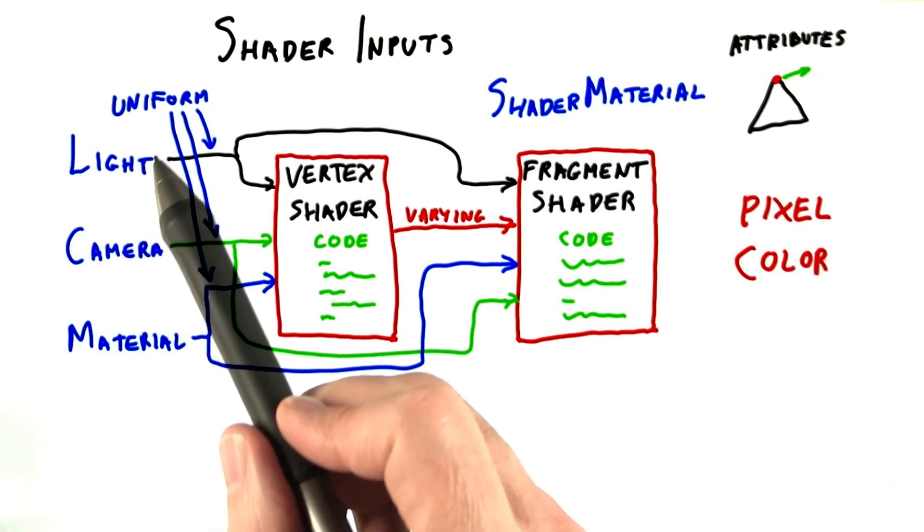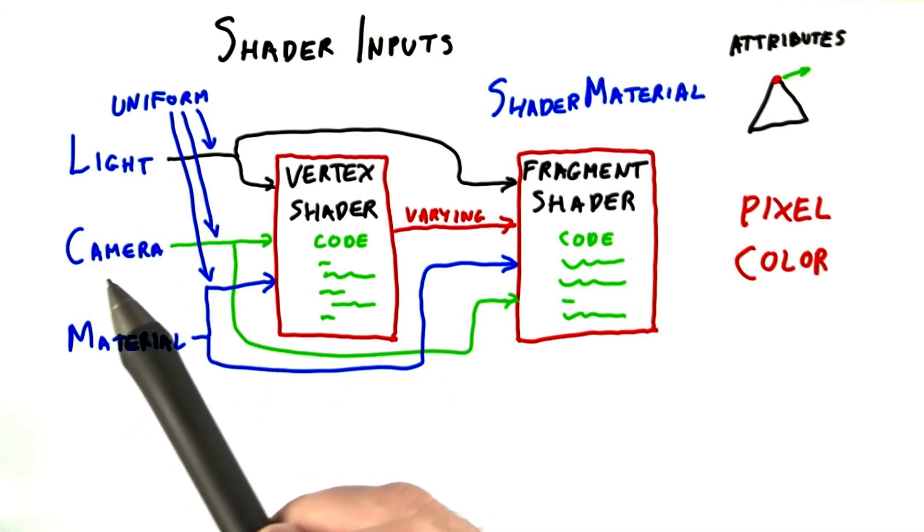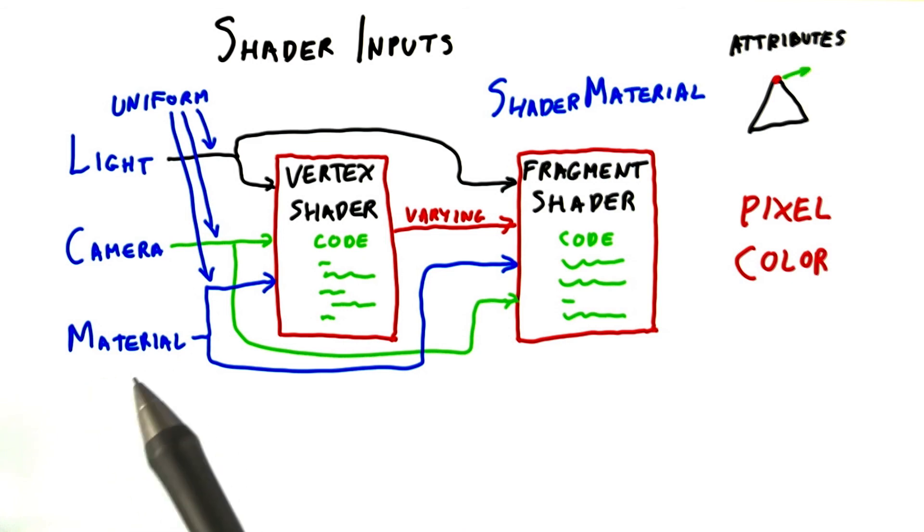Uniform data is whatever is constant for the triangle being shaded. For example, values such as the position of light sources and the color and shininess of the material are uniforms.